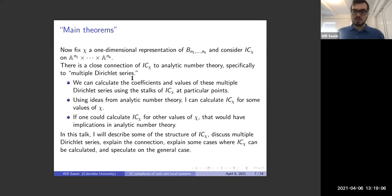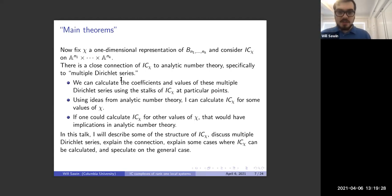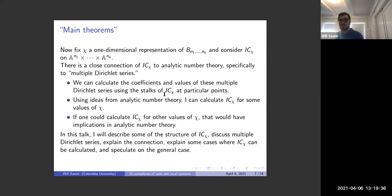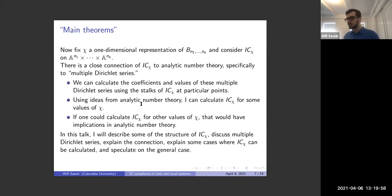I claim this complex has a very close connection to a subfield of analytic number theory called multiple Dirichlet series. The statement I proved has the form: we can calculate the coefficients of these multiple Dirichlet series and the values of the multiple Dirichlet series using the stalks of this IC sheaf at particular points. Because of this strong connection, you can ask whether what people know about these multiple Dirichlet series in analytic number theory is explained by properties of the IC sheaves — and it turns out that it is. There are very nice geometric properties of the IC sheaves inspired by this analytic number theory perspective.